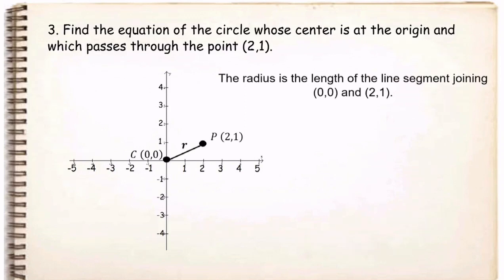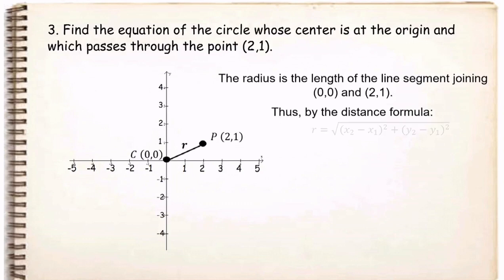The radius is the length of the line segment joining (0, 0) and (2, 1). So we can now solve for the value of r using the distance formula, which is equal to the square root of (x₂ − x₁)² + (y₂ − y₁)². Let the point (0, 0) be the first point — x₁ and y₁ — and the point (2, 1) be the second point — x₂ and y₂.